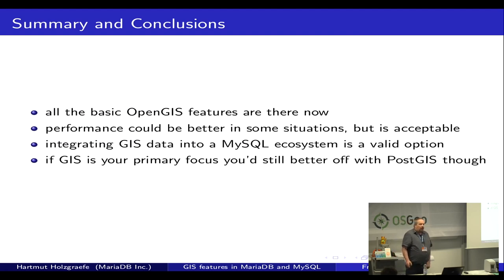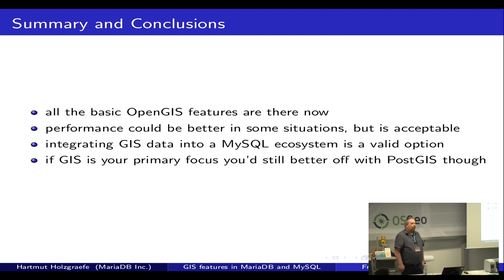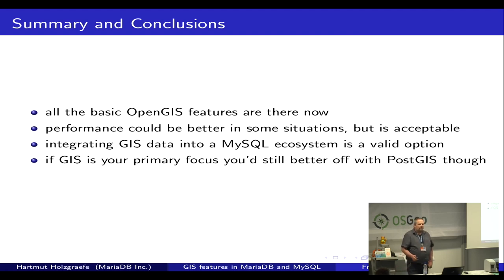In summary: we now have all the OpenGIS required features. Performance could be better but is acceptable. If you have a MySQL or MariaDB installation already and only want to add GIS-specific features, this is now a valid option. But if GIS is your primary focus, you're still better off with Postgres and its richer feature set. However, if you have a large MediaWiki or WordPress installation — bound to MySQL/MariaDB because certain plugins don't work on Postgres — you still have the option to use GIS features in the same database.